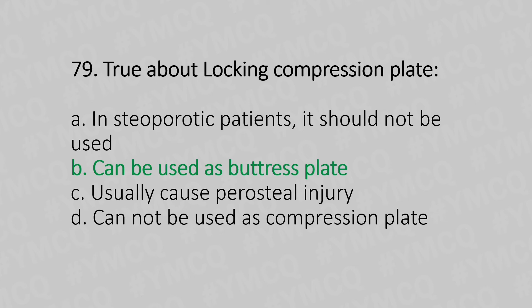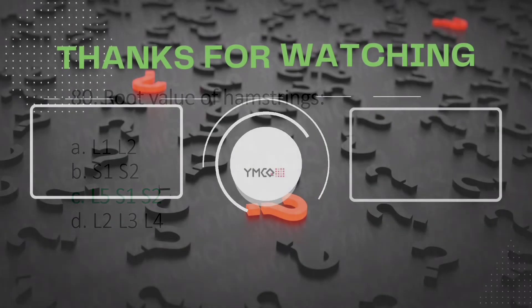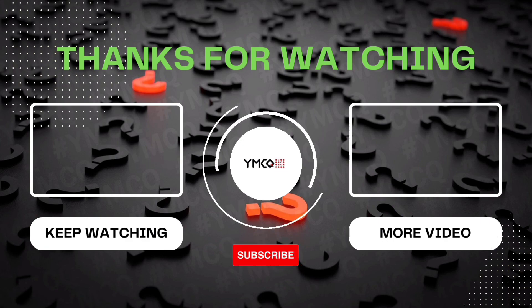Question 80: Root value of hamstring — option A: L1 L2, option B: S1 S2, option C: L5 S1 S2, option D: L2 L3 L4. The answer is option C: L5 S1 S2.